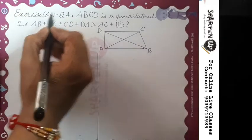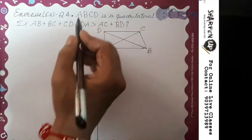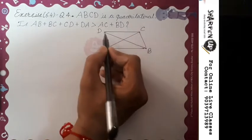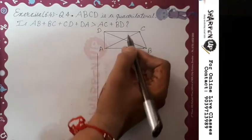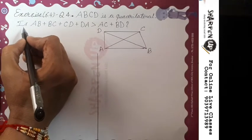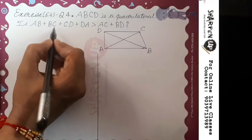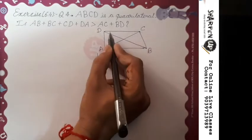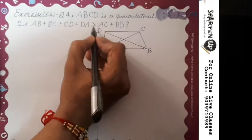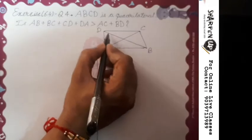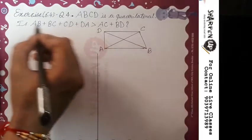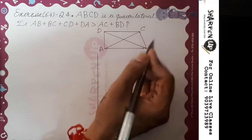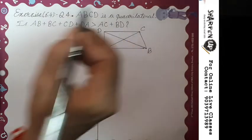Exercise 6.4, question number 4. ABCD is a quadrilateral. The question states that AB plus BC plus CD plus DA is greater than AC plus BD — that means the perimeter of this quadrilateral is greater than the sum of its diagonals. Let's see how to prove it.